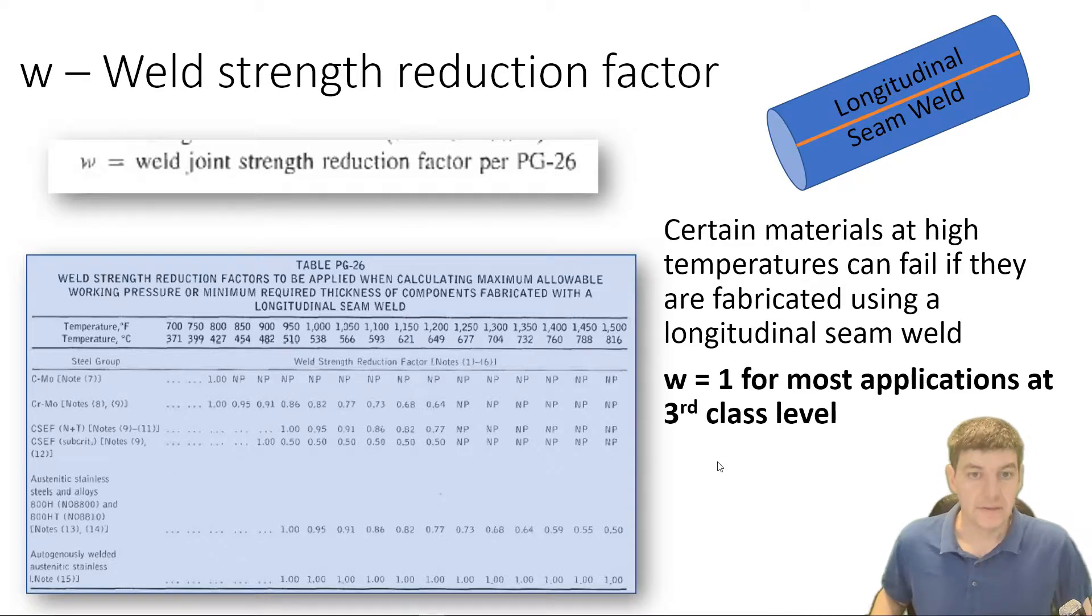And realistically, you shouldn't get a question that requires you to go to this table to find out the material weld strength reduction factor. So, I'm going to say W is going to be 1 for just about every application at your third class level. However, you still need to go and make sure that if you do have a specified material out of this table at a fairly elevated temperature, you may need to find a value for W for your application.